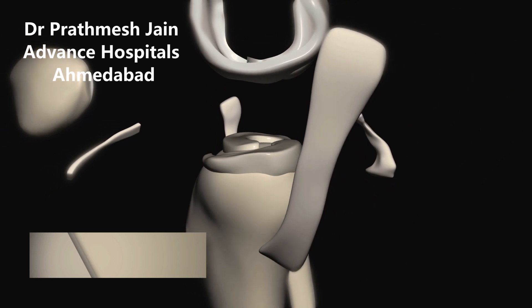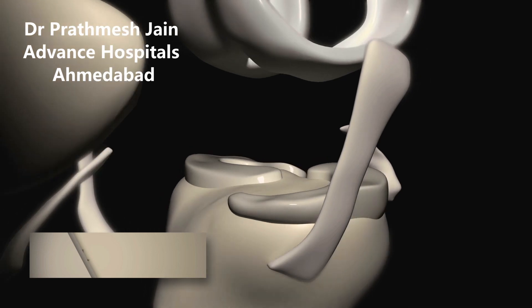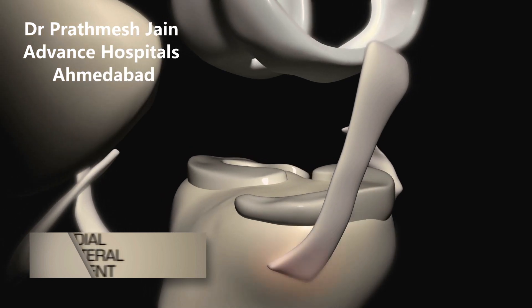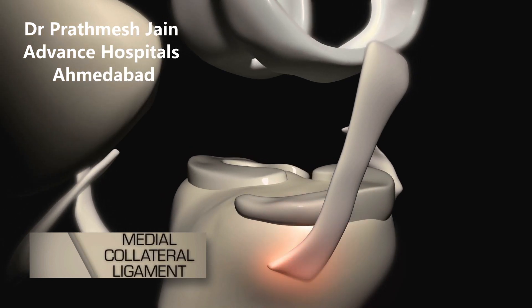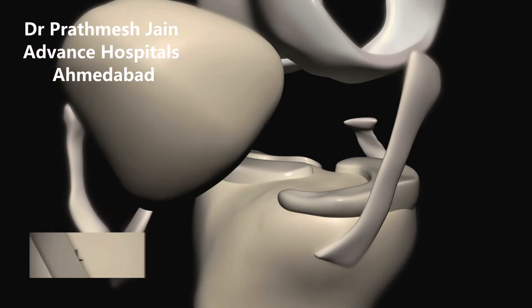Now we see that there is a broad ligament on the inside of the knee and this is called the medial collateral ligament. This is a very important ligament which gives support to the inside of the knee and holds the knee into position from inside.